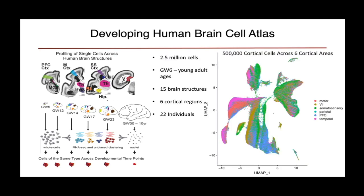From this work, we have generated data from about 2.5 million cells and looked at time periods as early as gestational week six spanning into young adult stages. We have explored 15 brain structures, six cortical regions, and have sampled 22 individuals. For the second trimester aspect of this dataset, which covers the stages of peak neurogenesis, I'll quickly show a plot that recapitulates initial findings that there are important differences, particularly in the excitatory populations, where cells are segregating by cortical area. We are interested in intersecting these data with other datasets and understanding the developmental trajectories important for the emergence of these specific cell types.